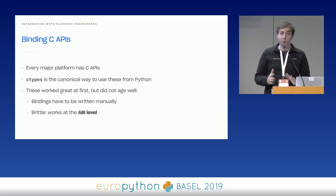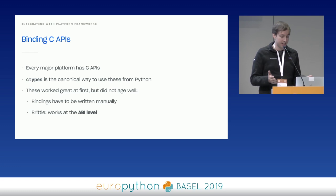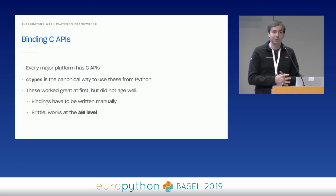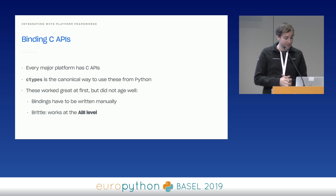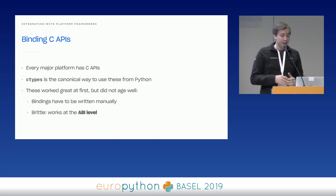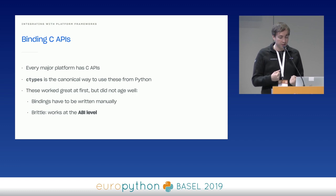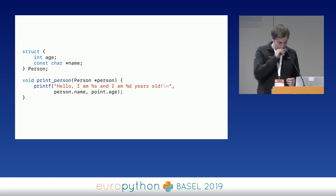Let's start with the most common type of bindings: C. Almost every single platform has a C API. We've used a lot of ctypes — probably tens of thousands of lines in our codebase. This is a canonical way to use the Python C API, and it worked really well at first, but didn't age well. As the CFFI team explains in their docs, ctypes operates at the API level, meaning you have to write these bindings manually. It's really easy to make a mistake, because these APIs are generally meant to be used with a compiler, not this kind of manual binding.